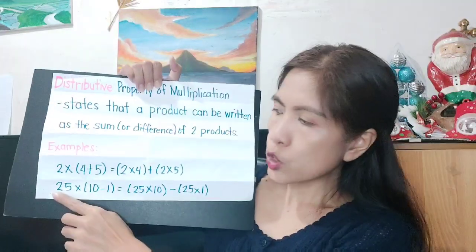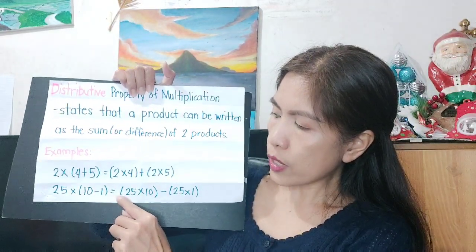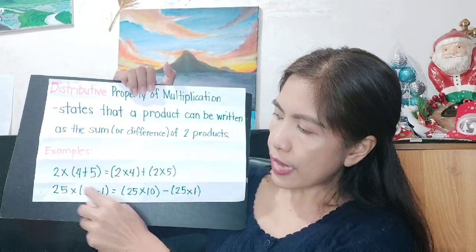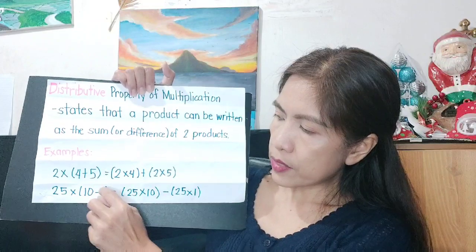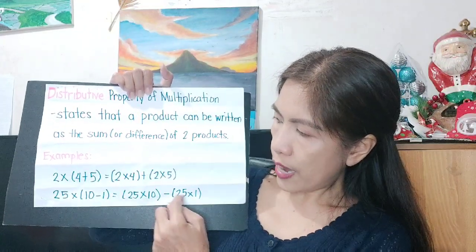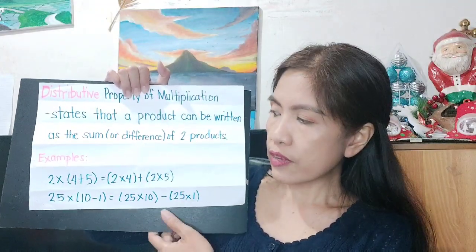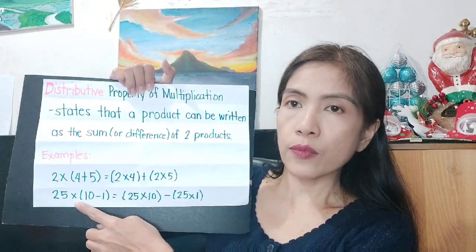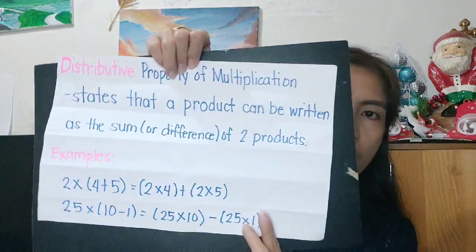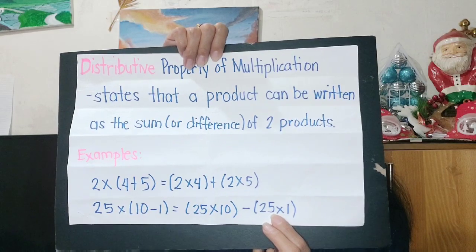Another example is 25 times (10 minus 1). Distribute 25: 25 times 10, then copy minus, then 25 times 1. They will still give us the same product. This is the distributive property of multiplication.